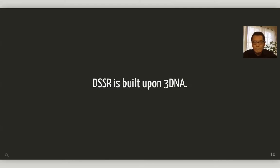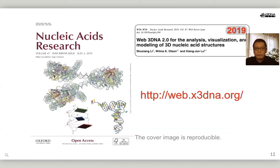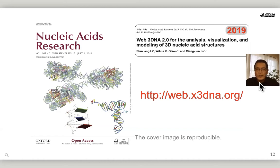To better understand DSSR, we need to go back in time. DSSR is built upon 3DNA. 3DNA stands for three-dimensional nucleic acid. It was developed around year 2000 while I was a postdoc at Wilma Olsen's lab at Rutgers. The two key publications of 3DNA are the 2003 NAR paper and the 2008 Nature Protocols paper, both well-cited. Even today, the 3DNA NAR paper is still cited roughly 100 times per year. More recently, we built an updated web interface for 3DNA.